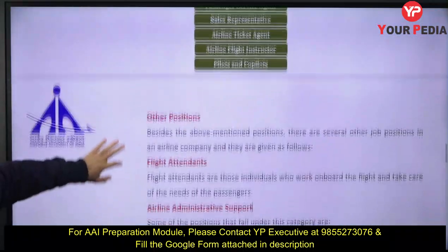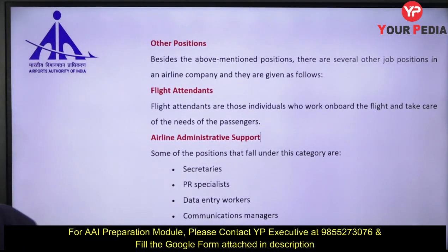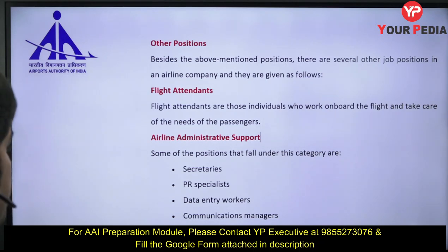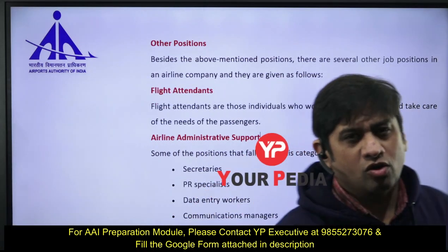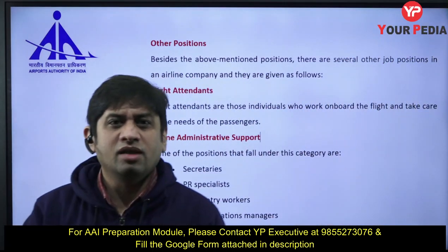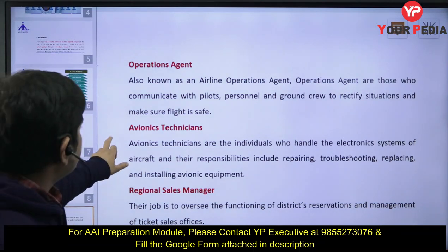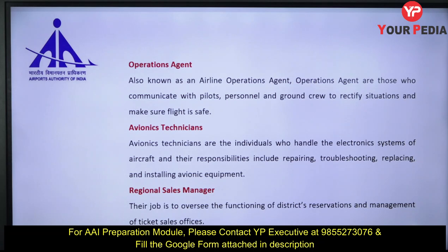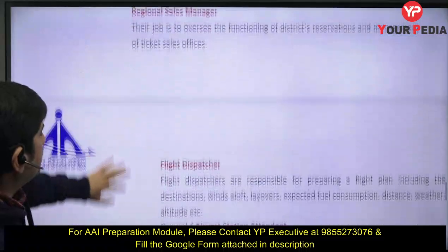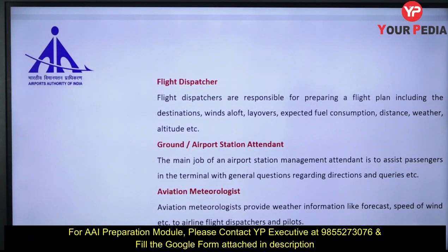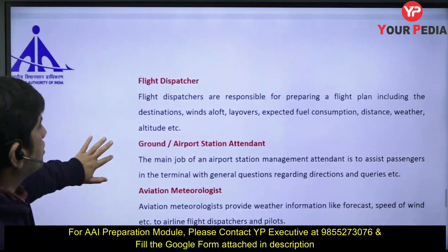The vertical hierarchy means, for example, president above vice president, CEO above CFO — that is proper vertical hierarchy. But many functions like flight attendant, administrative support, secretaries, PR specialists, communication managers, and operations agents are horizontal — they form a matrix. Airline operations agents communicate with pilots, ground crew, and make sure flights are on time and operating safely. Avionic technicians handle all electronic systems.